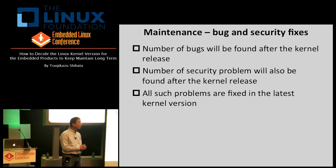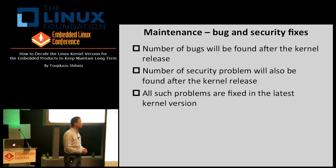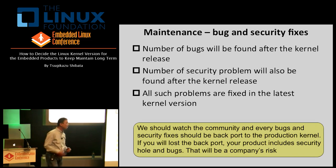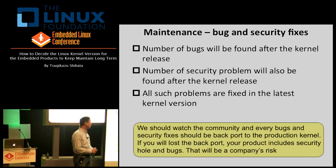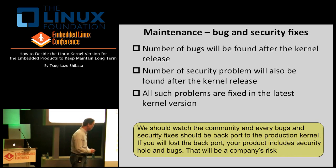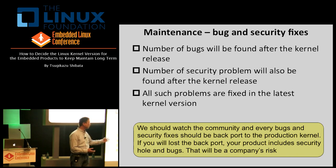The third one is maintenance. There are a number of bugs that will be found after the kernel release in the community, and also a number of security problems will be found. All such problems are fixed in the latest kernel version. Since we are using a slightly older kernel version, we should watch the community and every bug and security fix should be backported to the production kernel. If you miss the backport, your product includes security holes and bugs, which may become a company risk. Watching bug fixes and security fixes is very, very important for the production aspect.